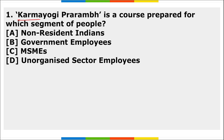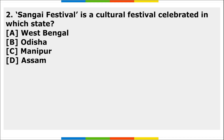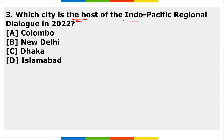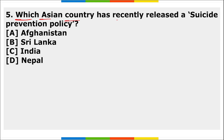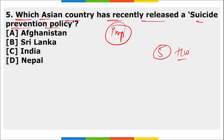Homework questions: First, Karam Yogi Praram is a course prepared for which segment of people? Second, the Sangai Festival is a cultural festival celebrated in which state? Third, which city hosted the Indo-Pacific Regional Dialogue in 2022? Fourth, which Indian was conferred with the UNEP Champions of the Earth Award, and for what? Fifth, which Asian country recently released a suicide prevention policy?